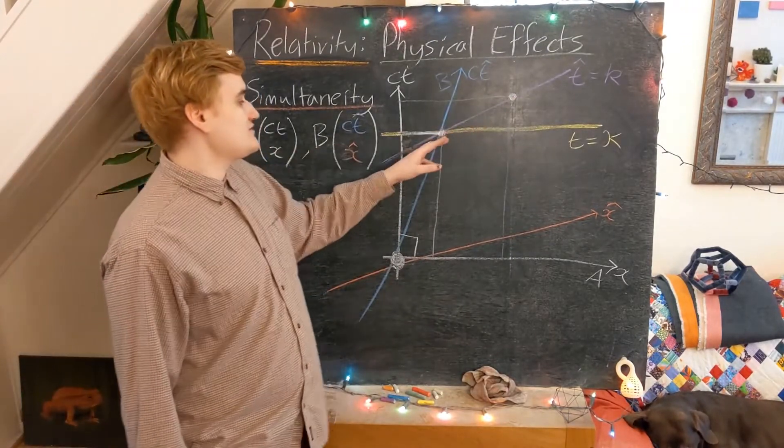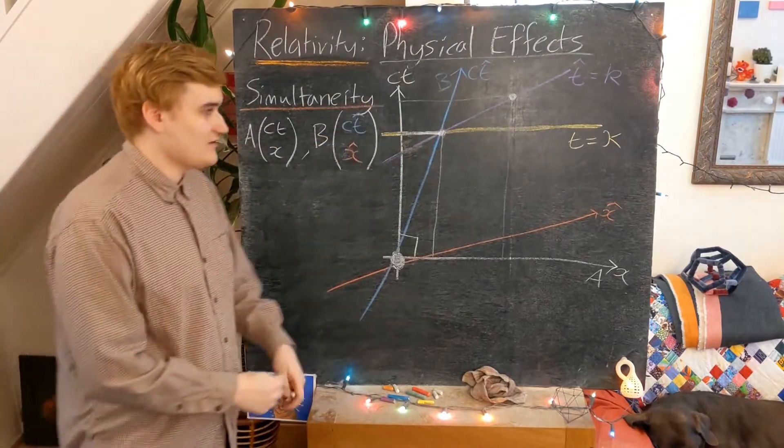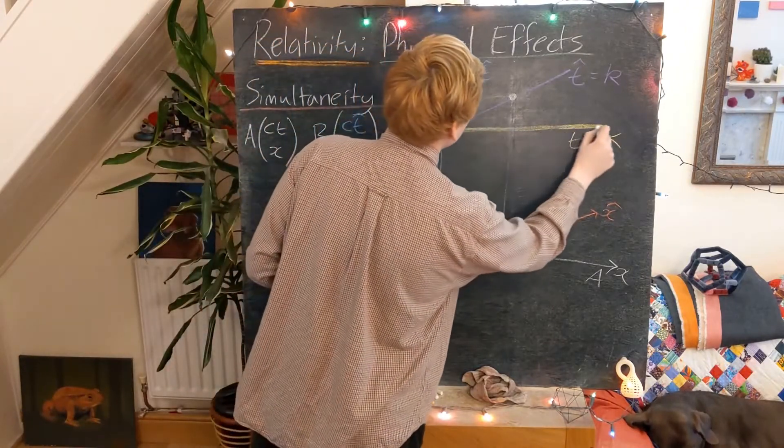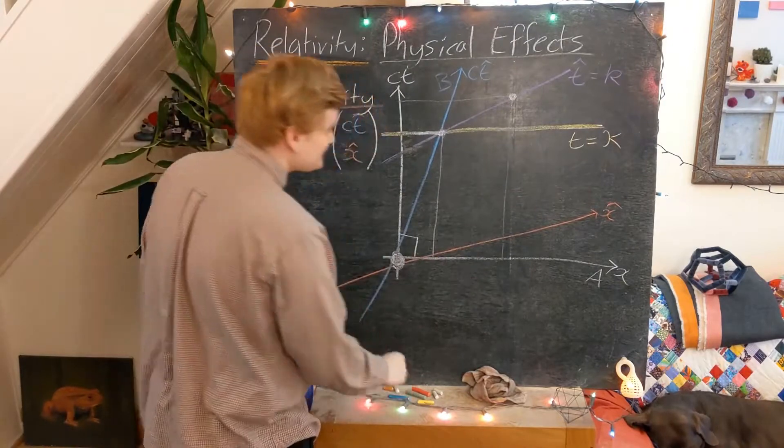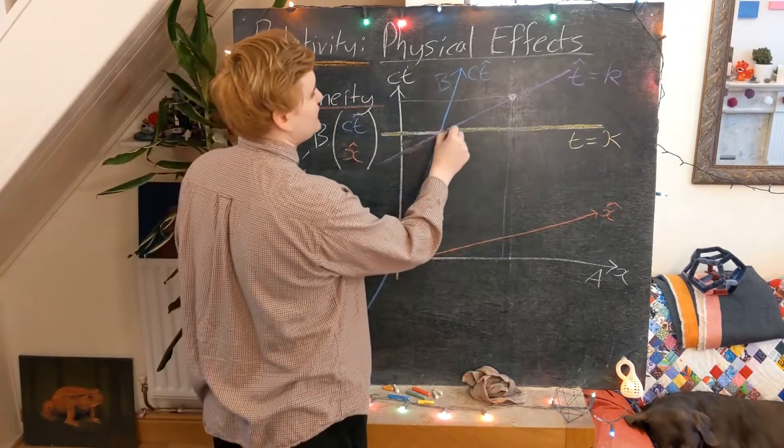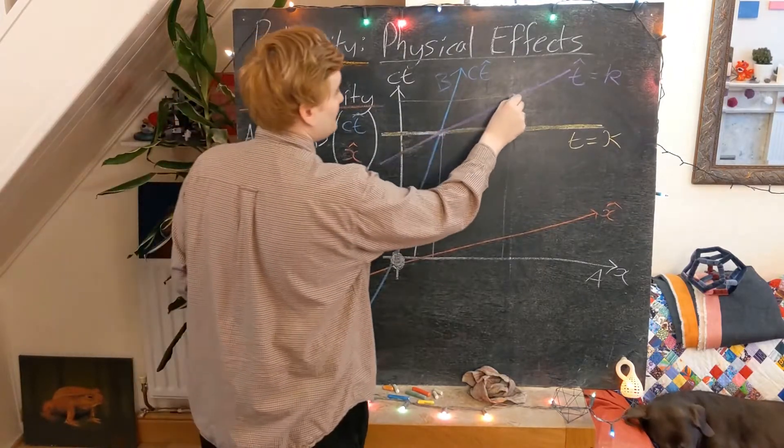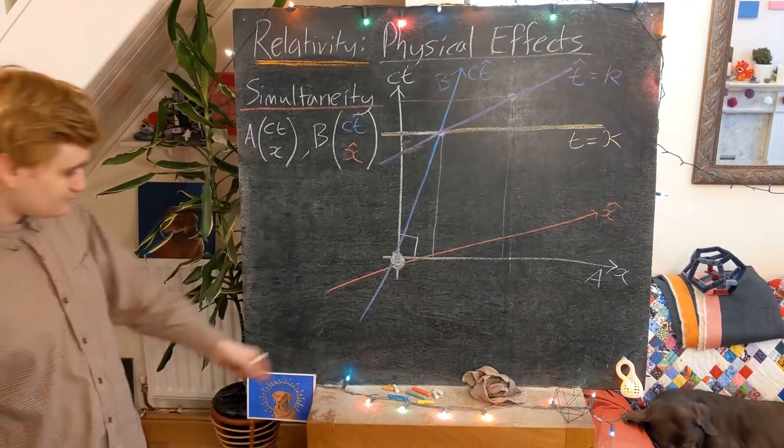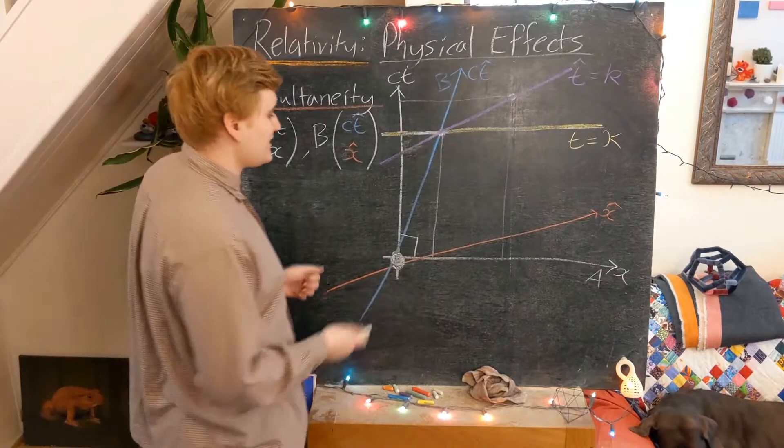And similarly, from the perspective of B, all of these yellow line, all of the events on this yellow line are also happening at different times. Because, well, a line of constant time is not horizontal, but it's now parallel with our x-hat axis.